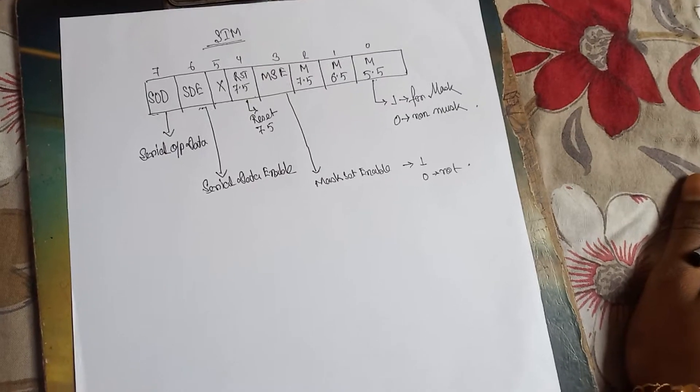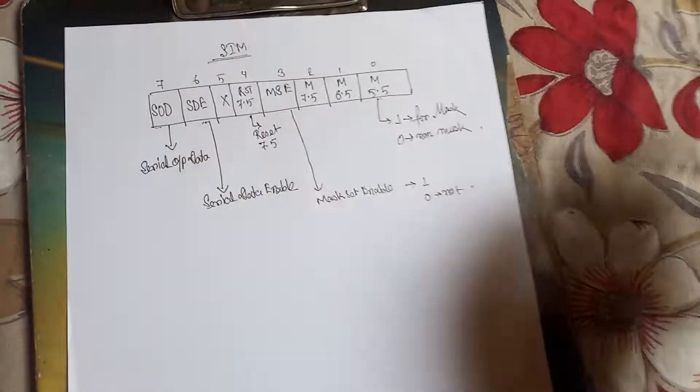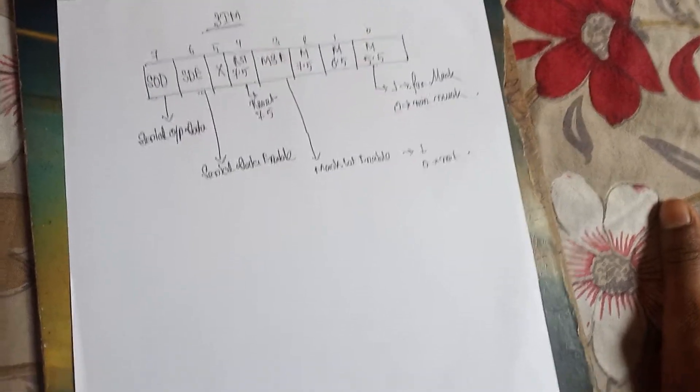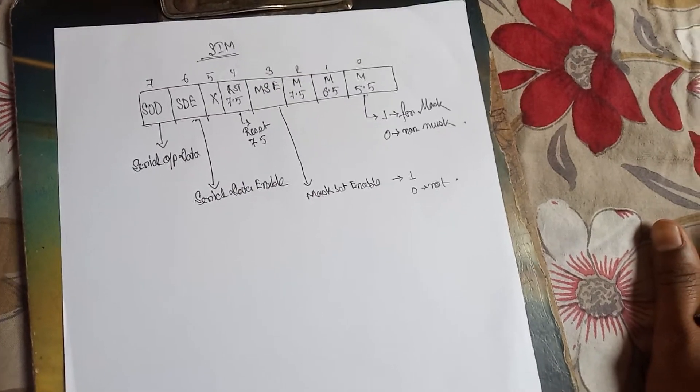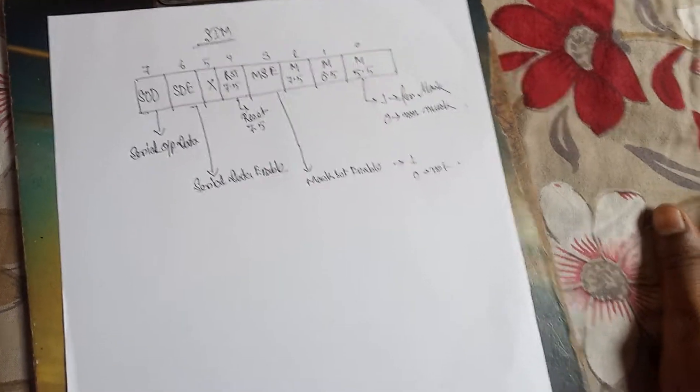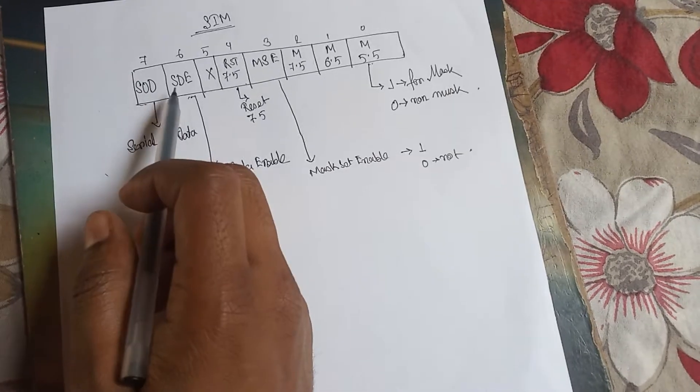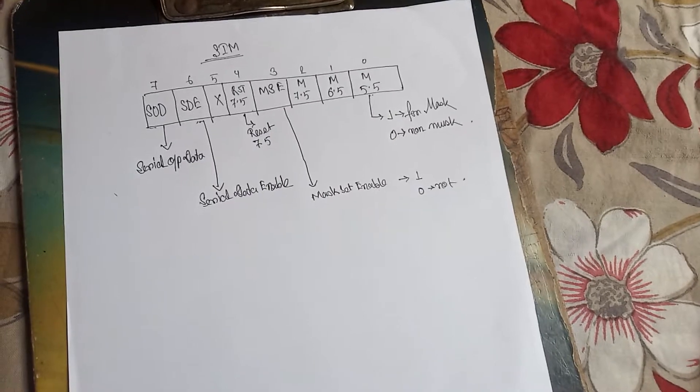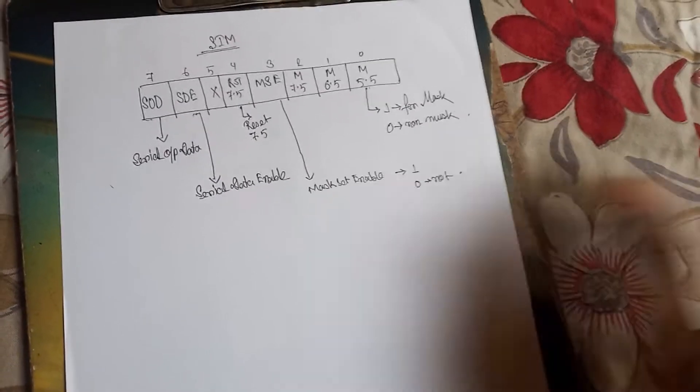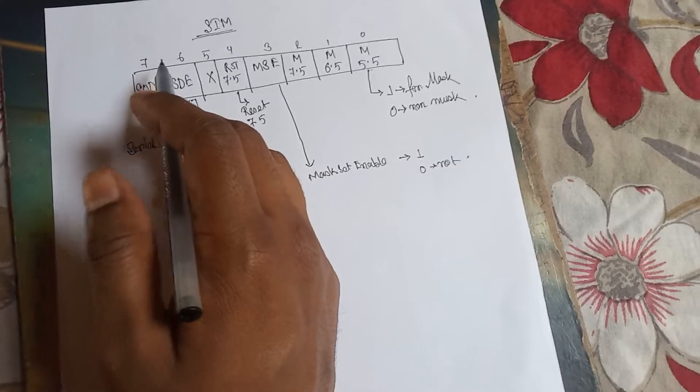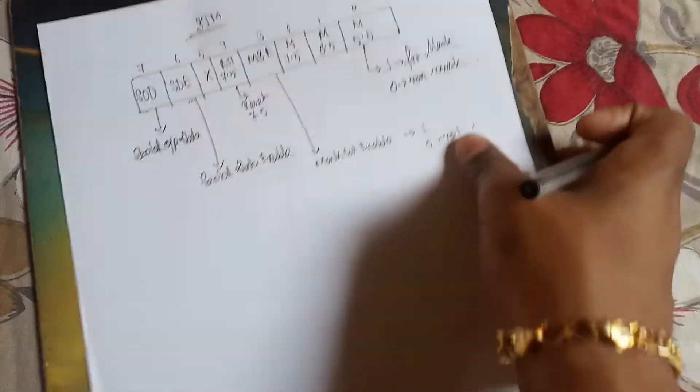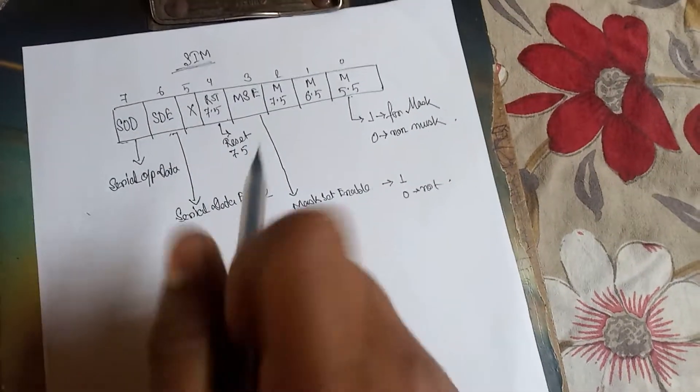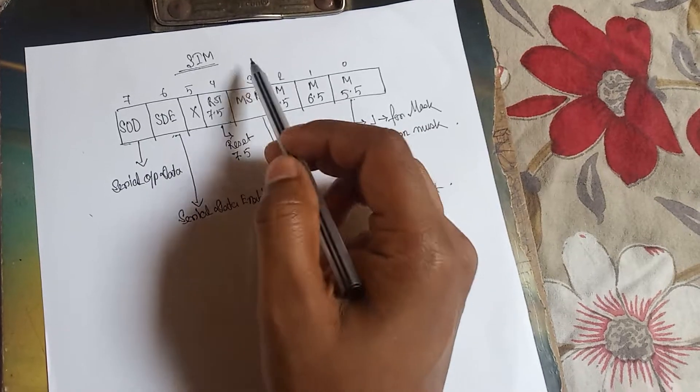RST 7.5, that is the reset of interrupt 7.5. SD means Serial Data Enable, and SOD means Serial Output Data. These two may or may not be one. For one, serial data enable will be high. For one, serial output data will be high. And for zero, both are in low condition. That is not used in this case.